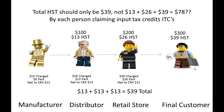So the end amount that the government is going to get is $39, which in fact is really just $300 times 13%. It's an important concept to understand: when you register for HST, you're charging it, and the net is what you're actually paying to CRA.